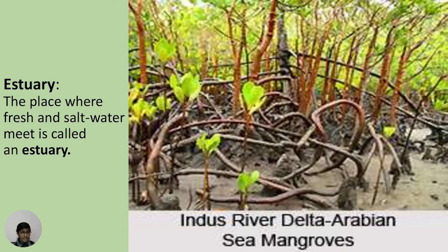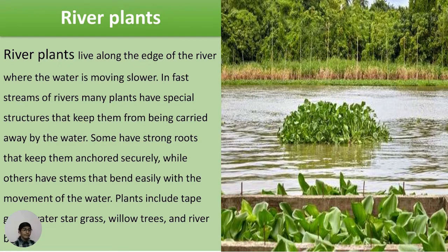The place where fresh and salt water meet is called an estuary — for example, the Indus River delta in the Arabian Sea. River plants live along the edges of the river where the water moves slowly. Some plants have strong roots that anchor them, while others have stems that bend easily with the movement of water.